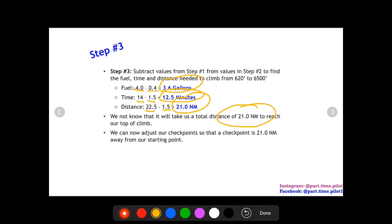Now this checkpoint will be our top of climb checkpoint. It makes things a lot easier. Now everything, all the legs before that point, can be calculated as climb, and all the legs after that can be calculated as cruise and then descent.